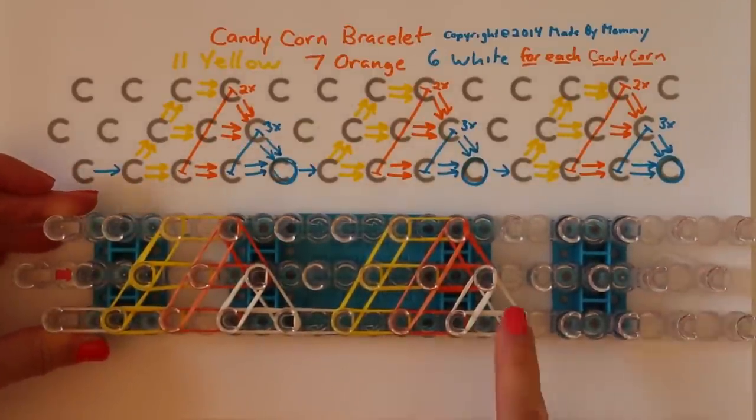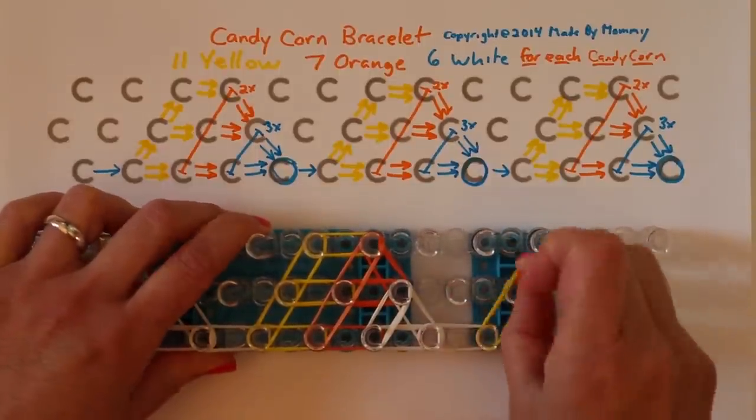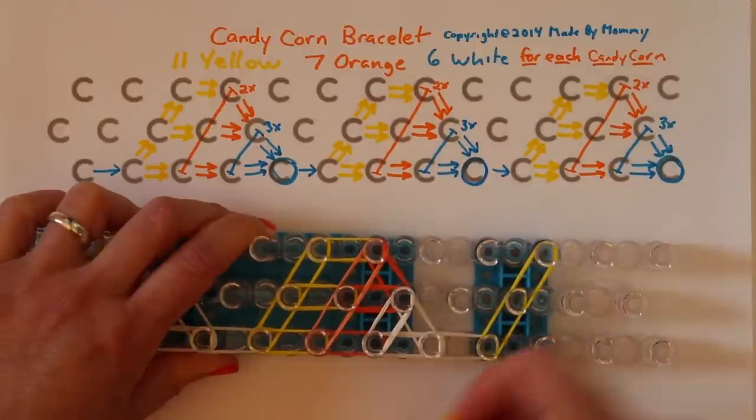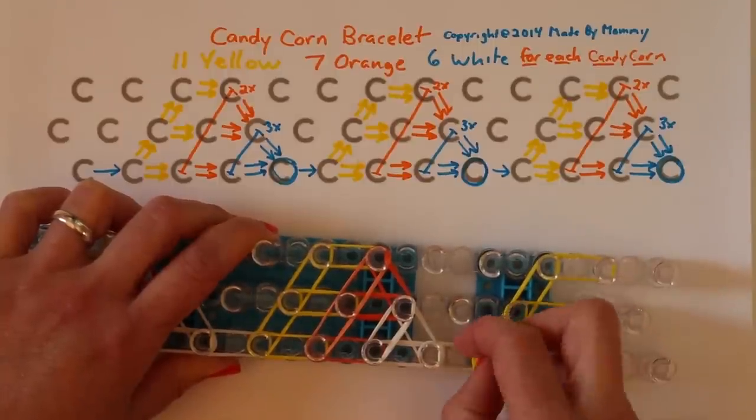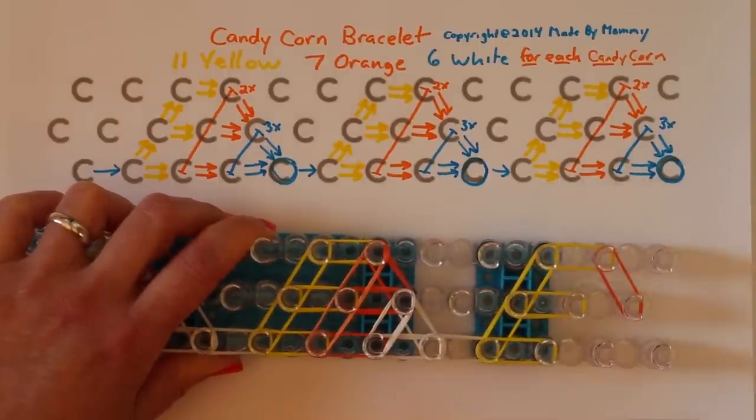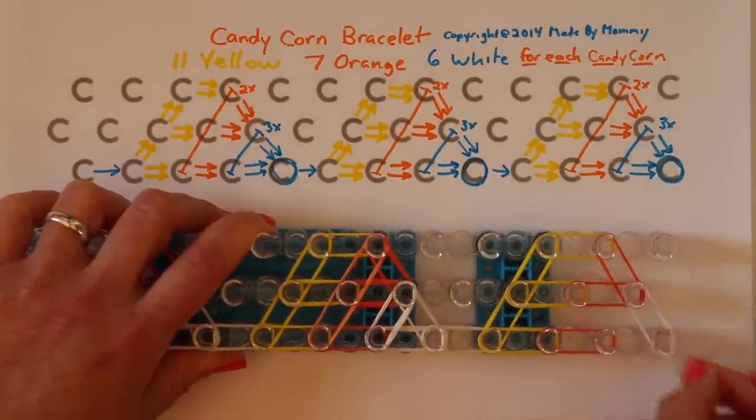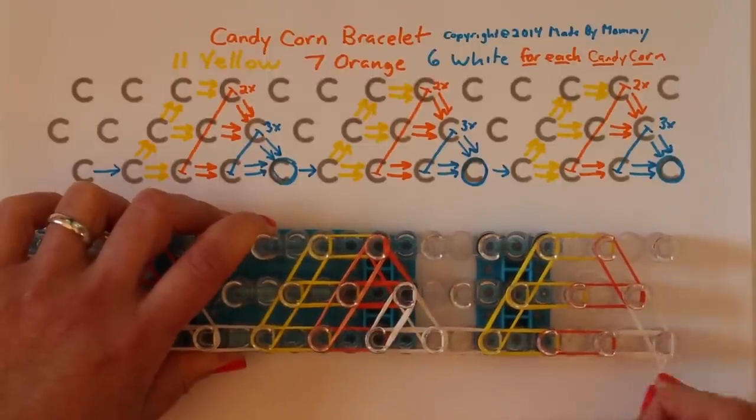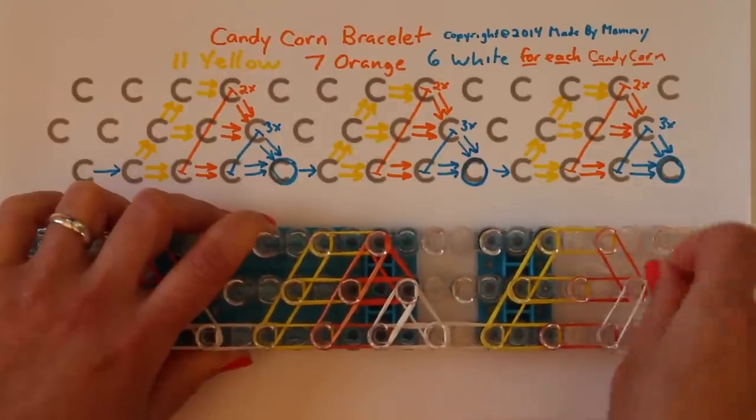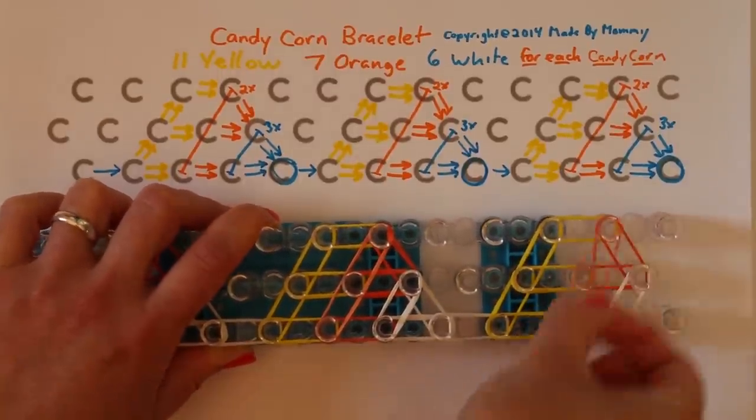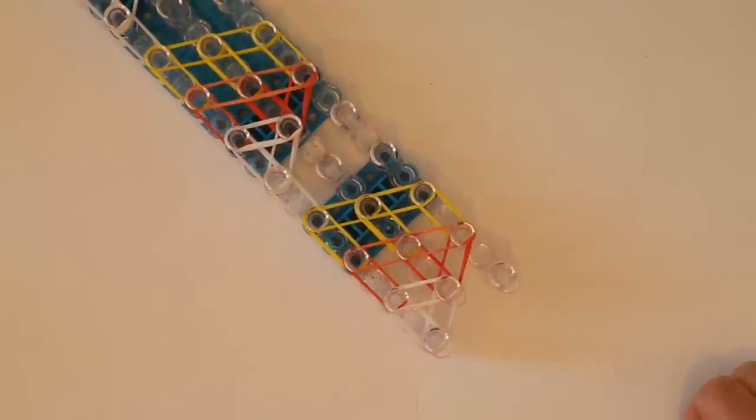And you do it again here. I'm going to fast forward as I place these rubber bands. Write in the comments below if you like when I fast forward steps that are repetitive, or if you don't. I've been doing it either way, and I'm trying to get a sense of which works better. Once you've got all those rubber bands set, we're going to take our hook and begin at the bottom of the loom here.